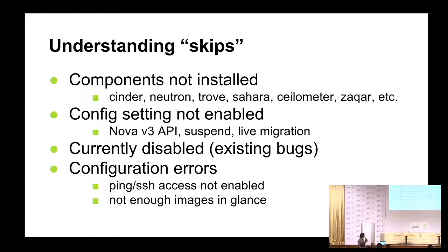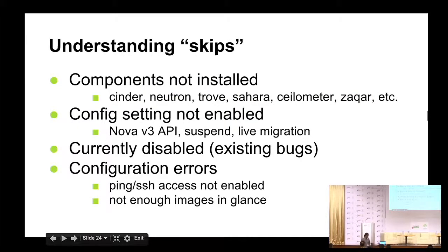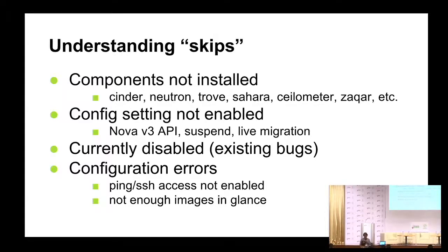To understand why there are so many skips: there are 322 skips on ARM versus 200 on x86, so it's not like x86 is clean right now — there are the same kind of issues on x86. There is a little bit of a discrepancy between what we see on ARM and x86. One of the reasons for skipped results is that the component is simply just not installed, and that's true for x86 as well. If you run an OpenStack minimal configuration and run the Tempest test suite against it, some subcomponents of OpenStack will simply not be configured. We also don't have live migration right now, which is another reason we see a number of skips.